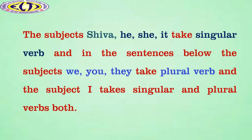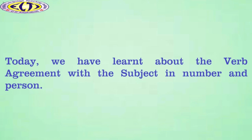Here, we can see that in the sentences above, the subjects he, she, it take a singular verb. And in the sentences below, the subjects we, you, they take a plural verb. And the subject 'I' takes both singular and plural verbs. Today, we have learnt about the verb agreement with the subject in number and person. We shall continue the same class in the next module. Thank you.